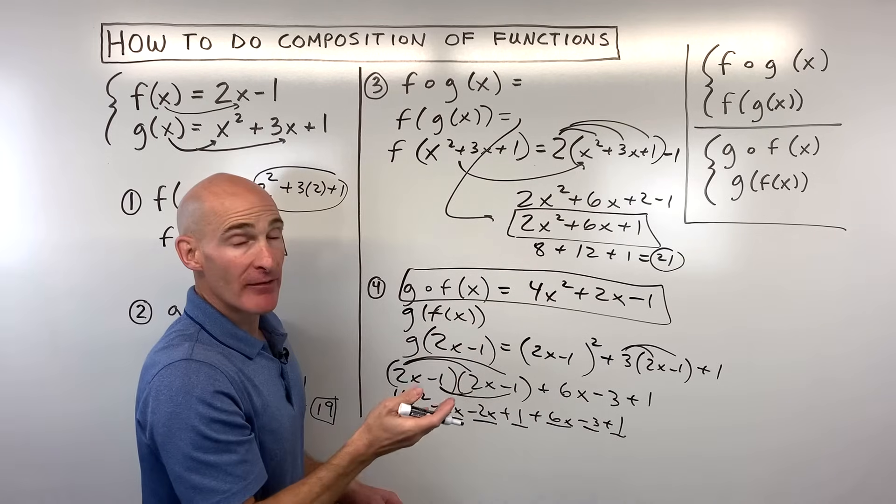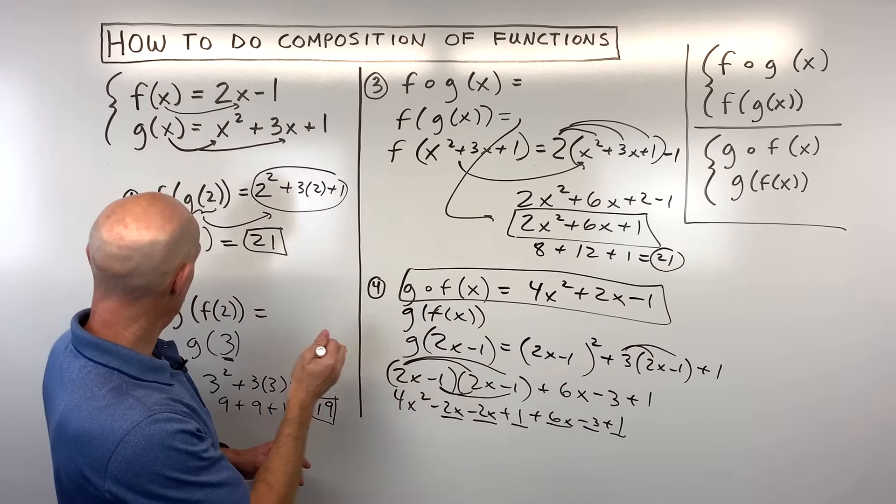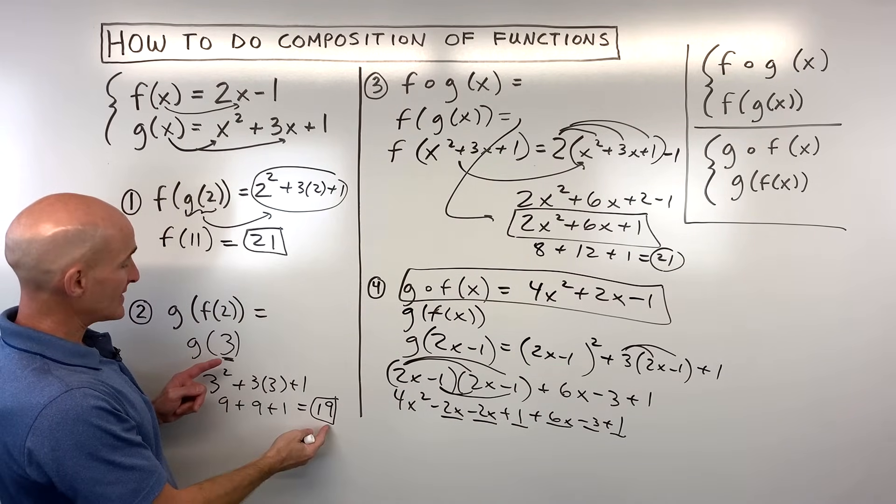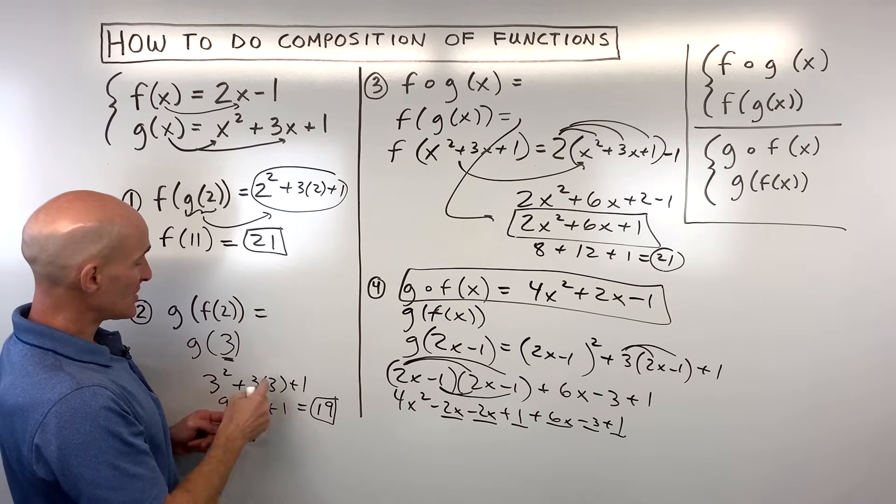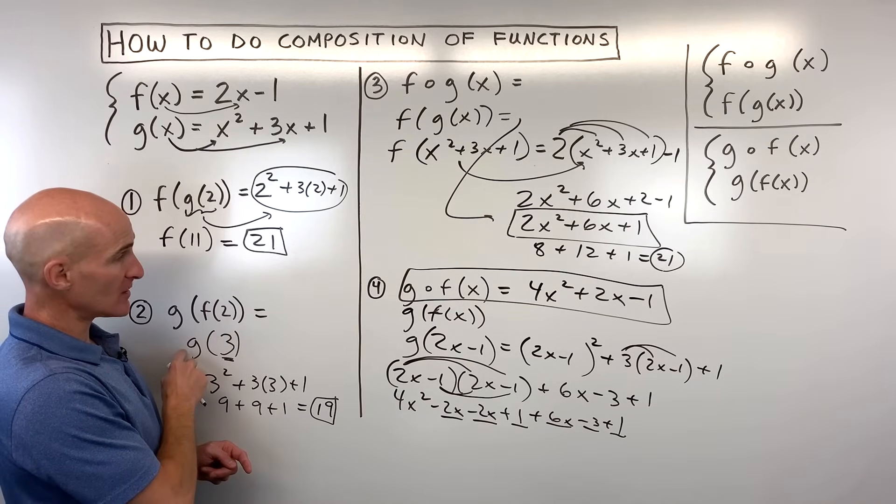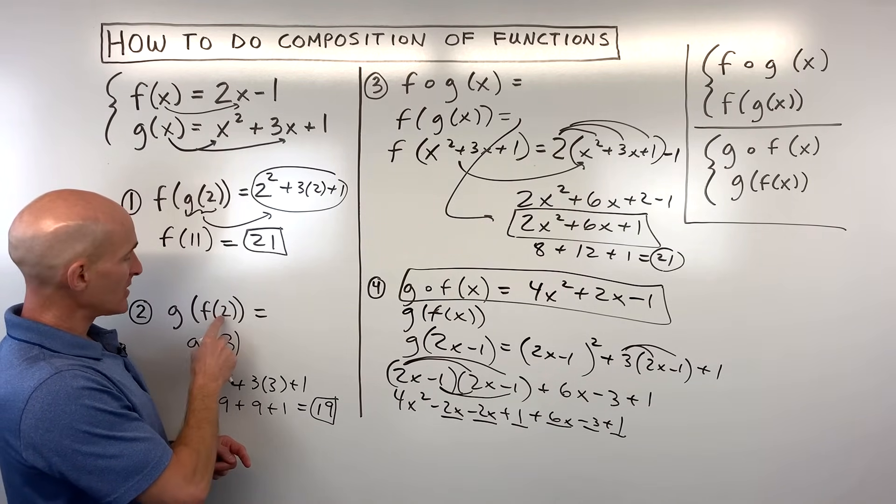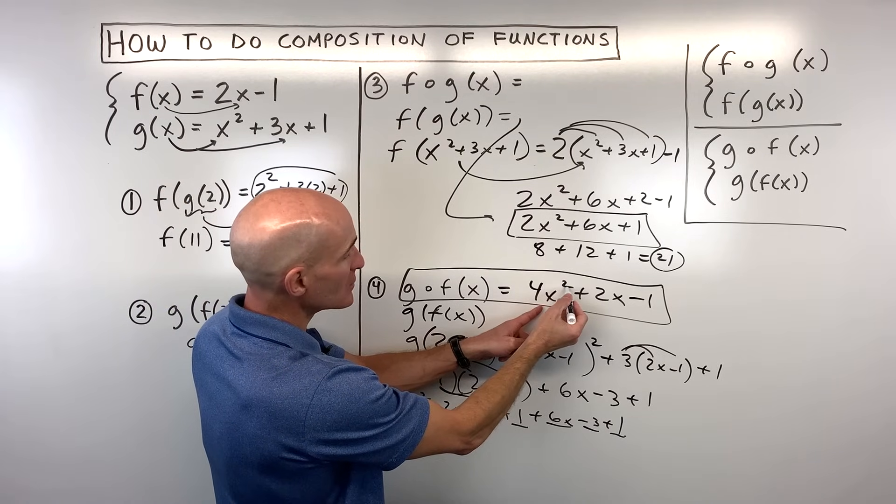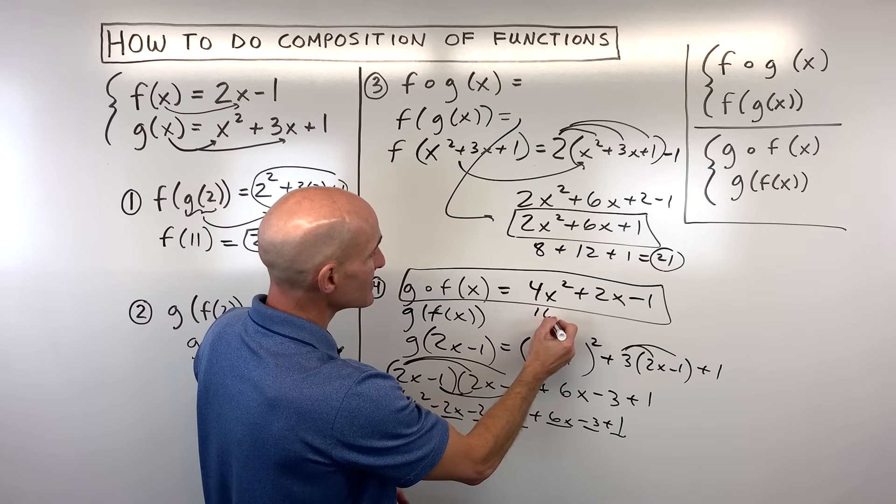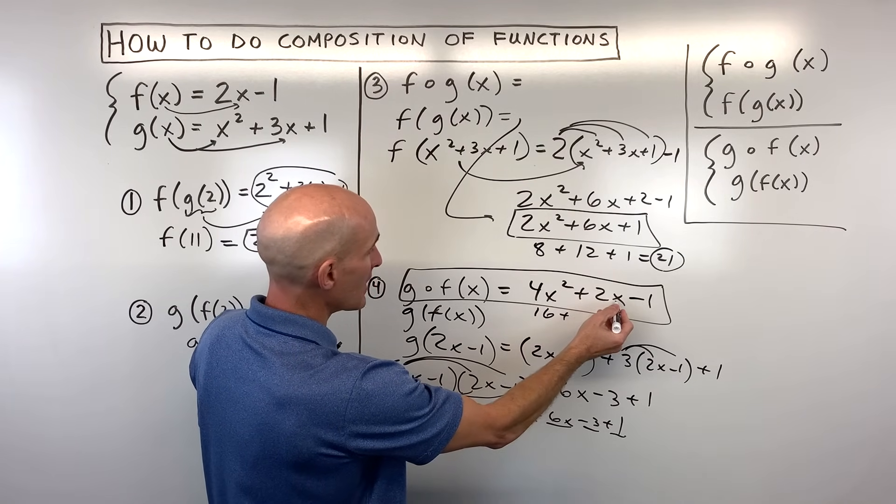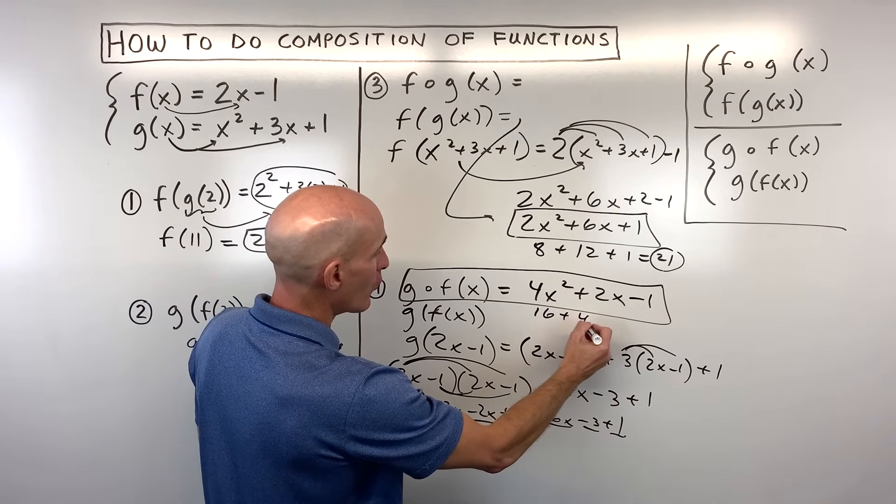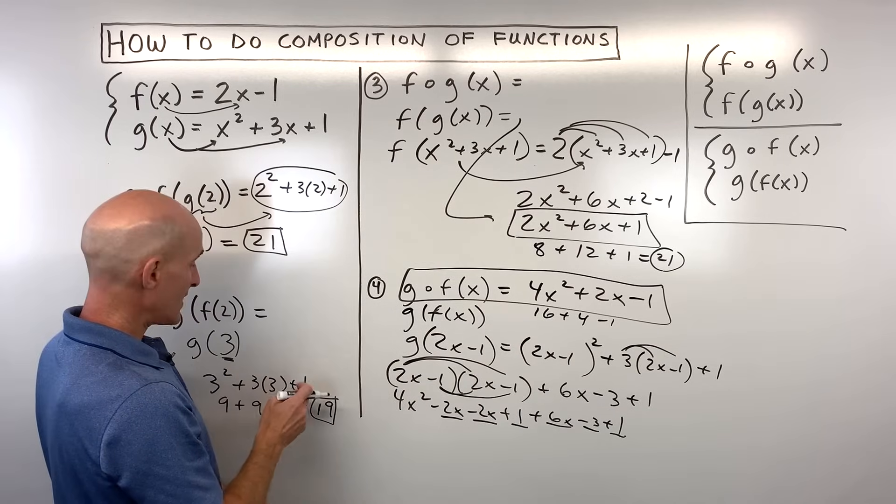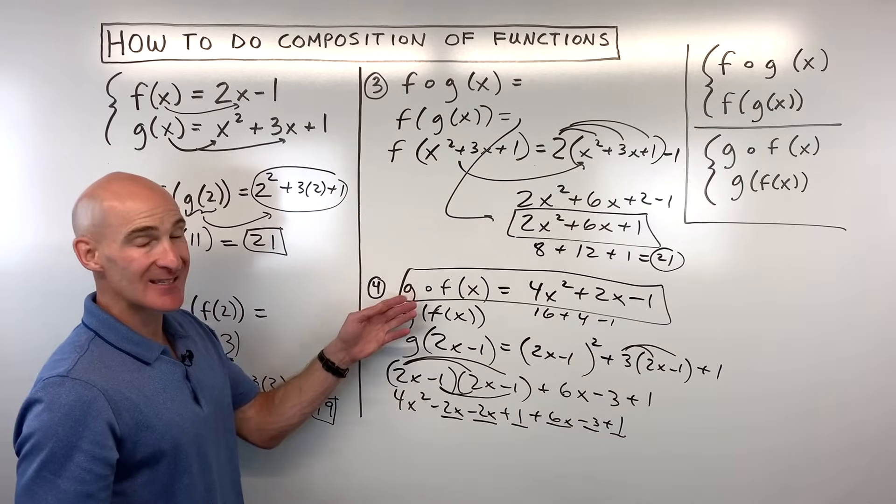And that's our g of f of x. Now again let's take a look, g of f of 2 we got 19. We had to do this in two steps first putting into the f function taking that answer and putting it to the g function. Let's put it all into this one and see if it'll do it in one go for us. So 2 squared is 4 times 4 is 16 plus 2 times 2 is 4 that's 20 minus 1 is 19. You can see we're getting the exact same answer.